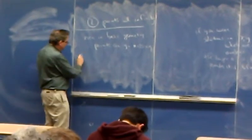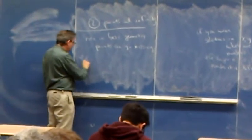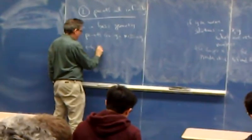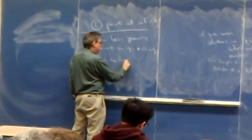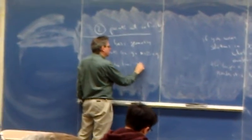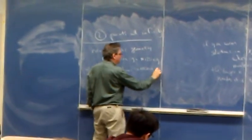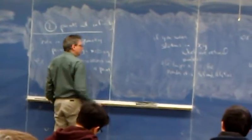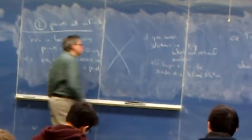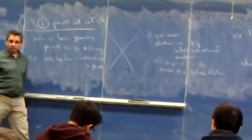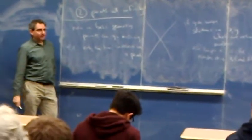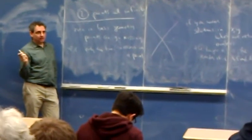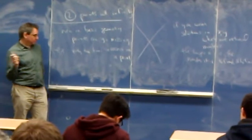What's a simple example of that? Well, for example, every two lines intersect in a point — two lines, the intersection is a point — except if the two lines are parallel.